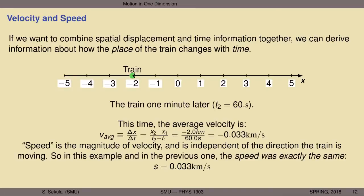Speed is a related concept to velocity: speed is the magnitude of the velocity — it is always positive regardless of whether velocity is positive or negative. To get average speed, simply ignore the sign in front of the velocity and quote the number. In both previous examples the speed was the same — 0.033 km/s — whereas the velocity was +0.033 km/s in the first case and −0.033 km/s in the second.